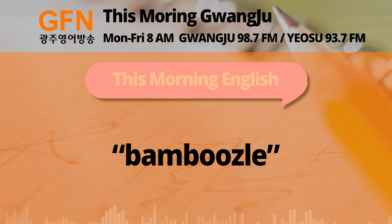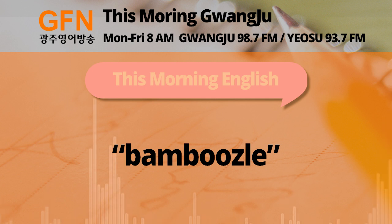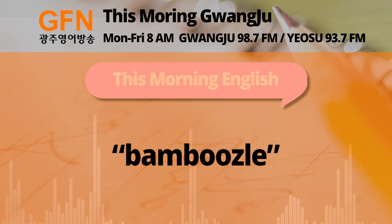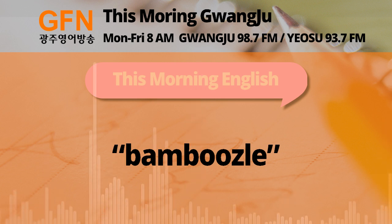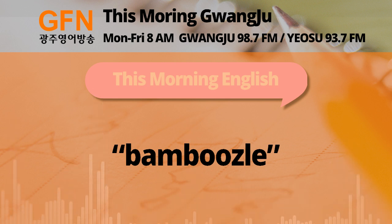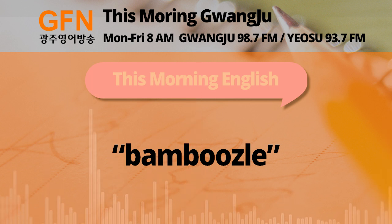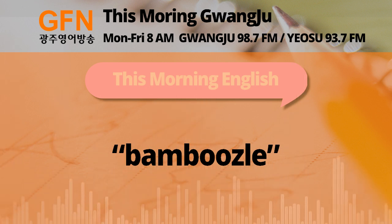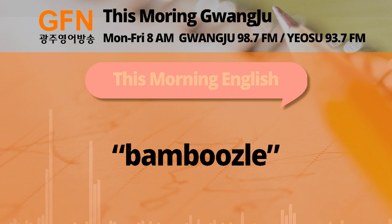Now this expression, bamboozle, might be pretty new for our listeners even after the explanation. So let's use a few examples to understand it better. For example, you could say: 'He was bamboozled into telling them his credit card number.' Or: 'They got bamboozled by the salesperson to buy a more expensive model than the one they'd originally planned for.' 이 bamboozled 단어가 많은 청취자분들께 굉장히 새로울 수 있을 것 같은데요. 예시들을 통해서 표현을 조금 더 확실히 이해해 보도록 하죠. He was bamboozled into telling them his credit card number — 그는 그들에게 속아서 그의 신용카드 번호를 알려줘버렸다. They got bamboozled by the salesperson to buy a more expensive model than the one that they'd originally planned for — 그들은 세일즈맨에게 속아서 원래 사려고 했던 모델보다 훨씬 더 비싼 모델을 사게 되었다.